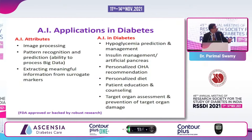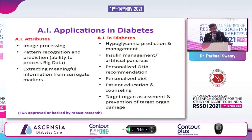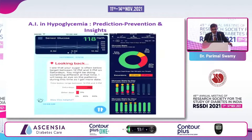Now, the applications of AI in diabetes care. I have only included FDA-approved indications or those backed by robust research. These are: hypoglycemia prediction and management, insulin management and artificial pancreas, personalized oral hypoglycemic recommendation, personalized diet, patient education, counseling and behavioral modification, and target organ assessment and prevention of target organ damage.